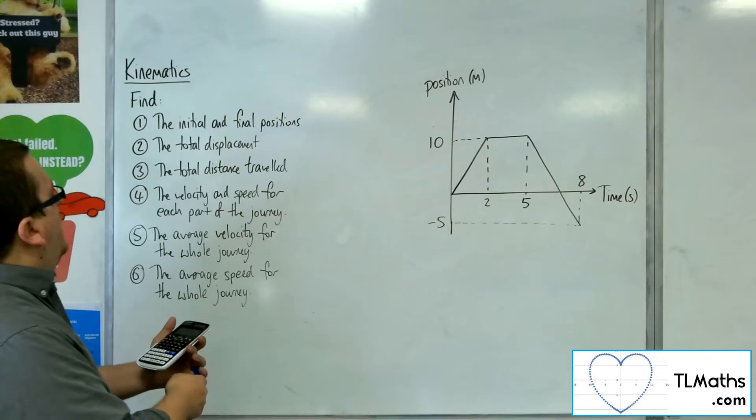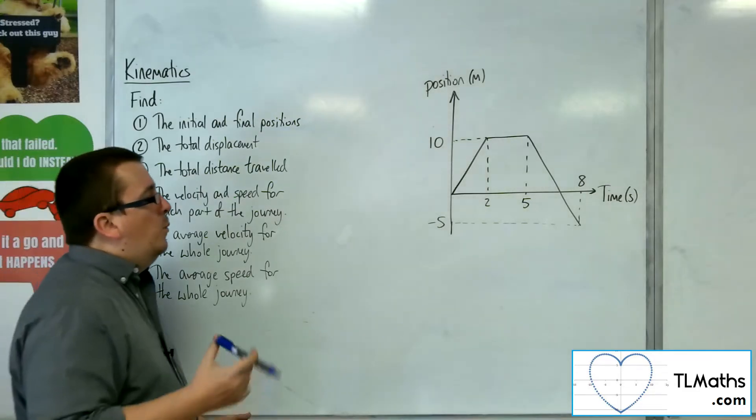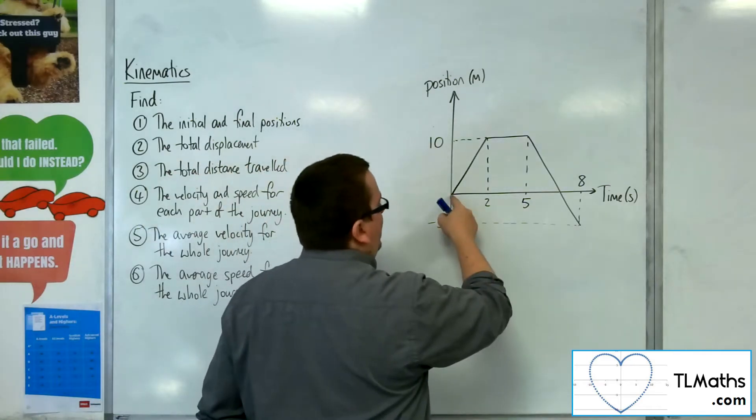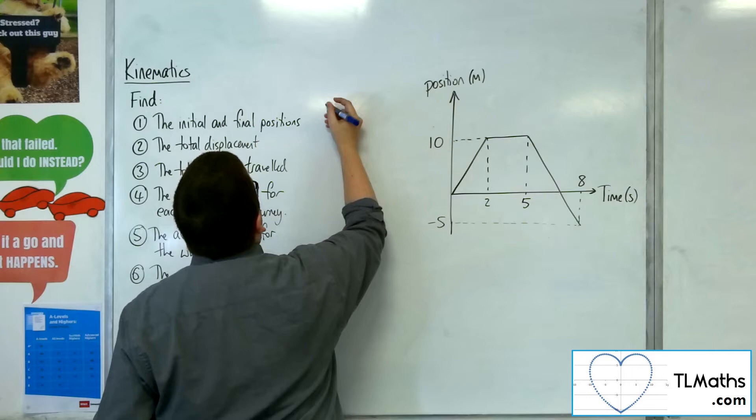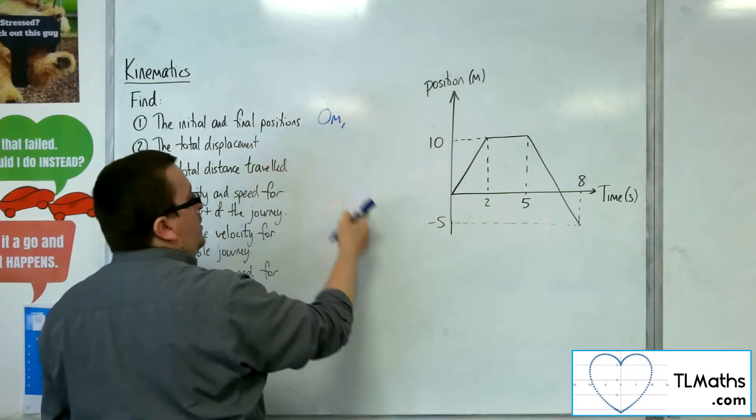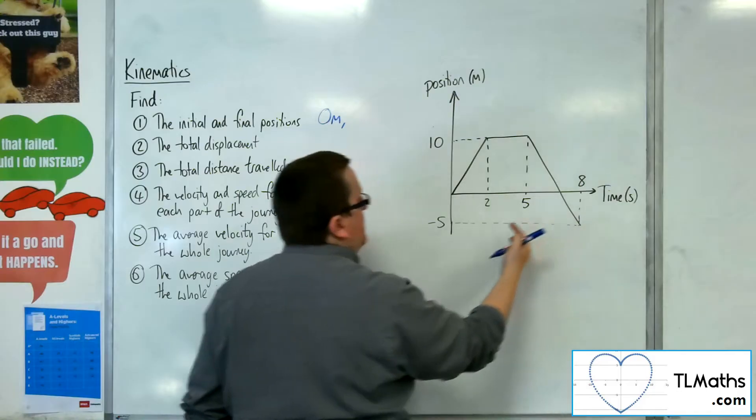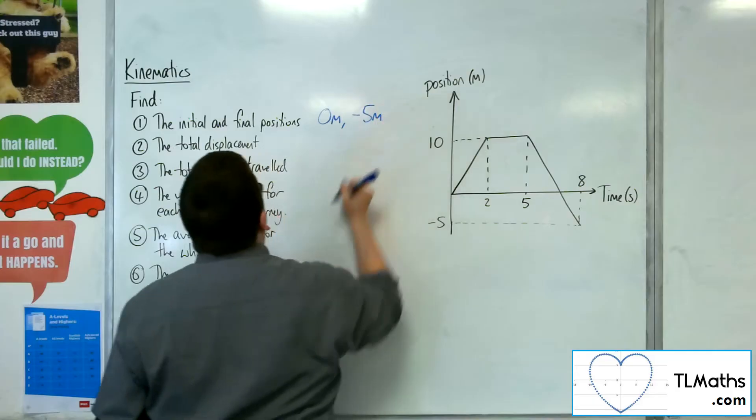So first of all, the initial and final positions of the particle. Well, initially, the particle is here, time zero, position is zero. So initial would be zero metres. And the final position, it's five metres away from where it originally started, so it would be minus five metres.